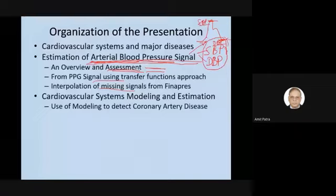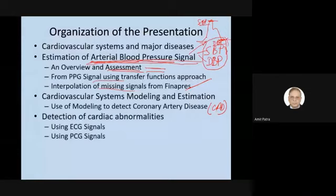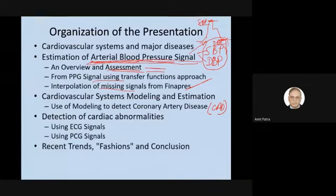We'll describe approaches we have tried and assess existing approaches, which we did not find very powerful as of now. There is reason to go deeper into the cardiovascular system — we need to understand what is happening inside the body as we make external measurements. Modeling is very important. We can detect diseases like coronary artery disease (CAD) and detect cardiac abnormalities using ECG or phonocardiogram (PCG) signals. I'll try to cover this full gamut of signals and conclude with recent trends.